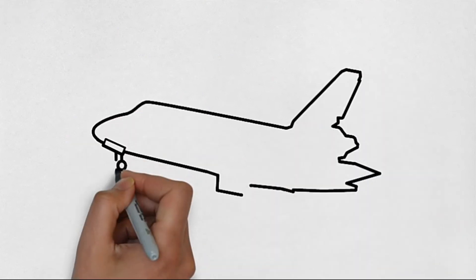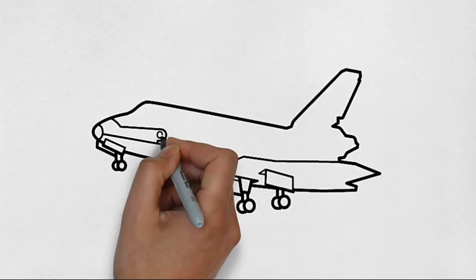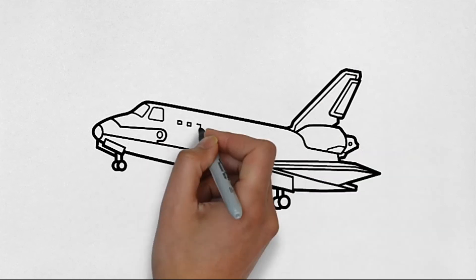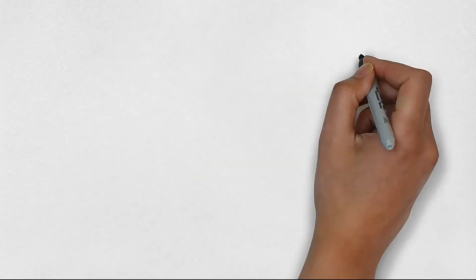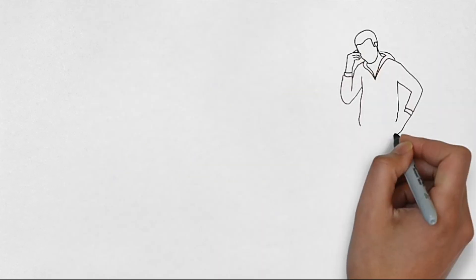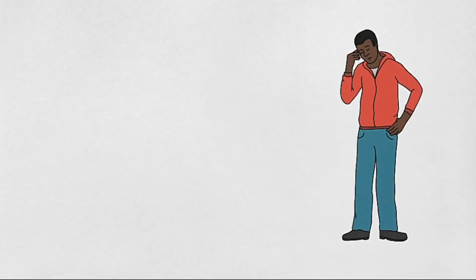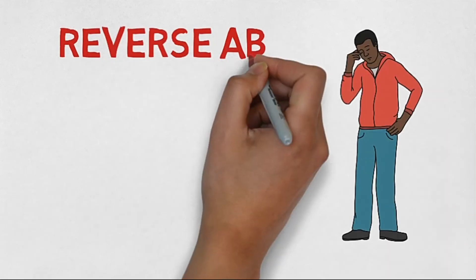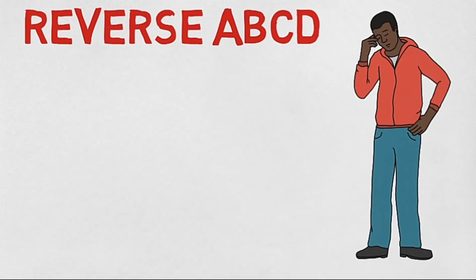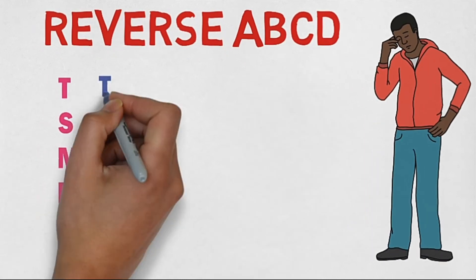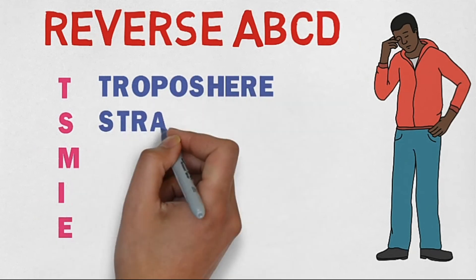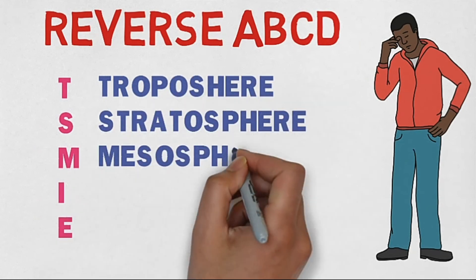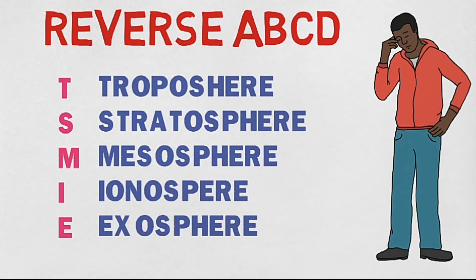Since mainly all aircraft fly in stratosphere, we have to deal with this layer primarily. Many people forget the layer sequence, so here is a memory tip — remember the reverse alphabet sequence from T to E: T (troposphere), S (stratosphere), M (mesosphere), I (ionosphere), and E (exosphere). It's not in any book, but you can use it to remember.